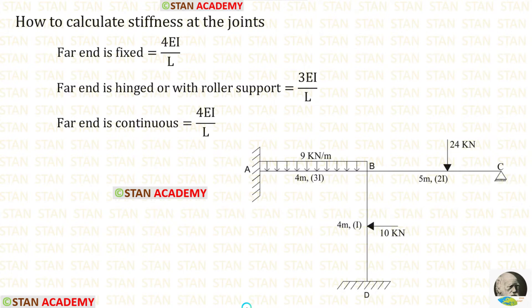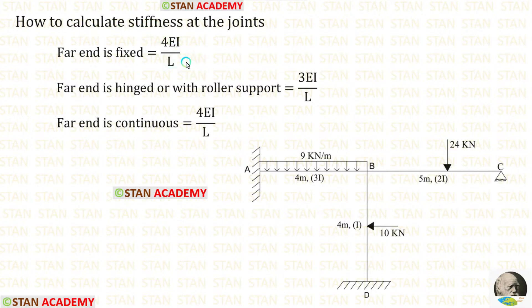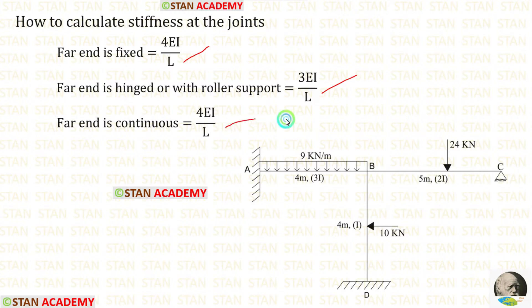In the moment distribution method we have to find the distribution factor, and we do so only at the joints. In this frame we have only one joint, that is joint B. The stiffness formulas are: 4EI/L if the far end is fixed, and 3EI/L if the far end is hinged or on a roller support. If the far end is continuous, the formula is also 4EI/L.